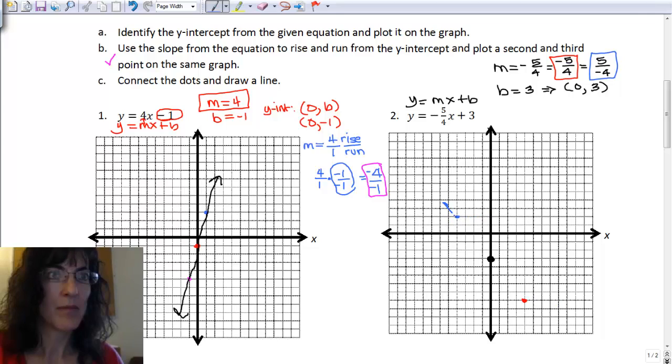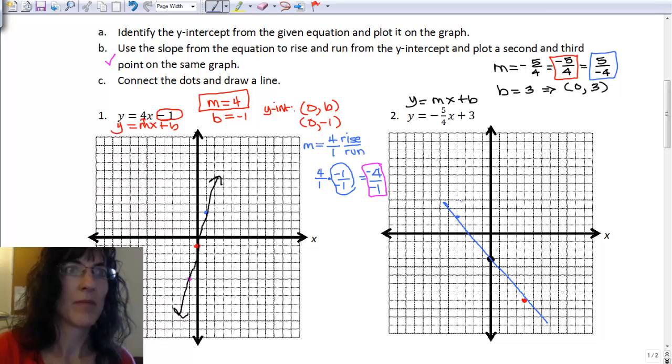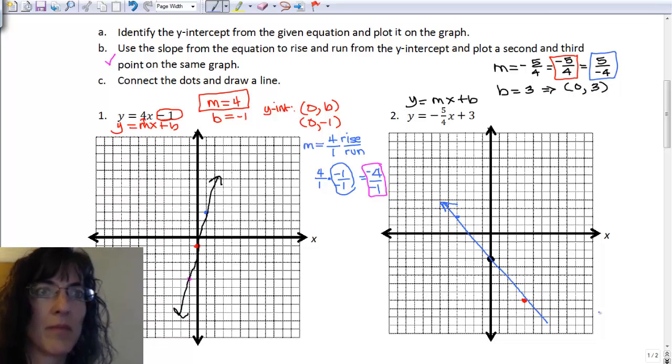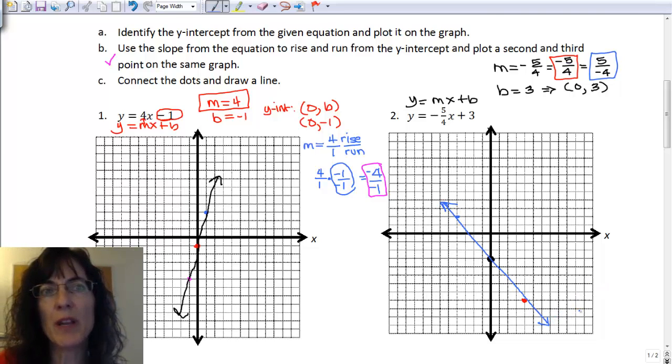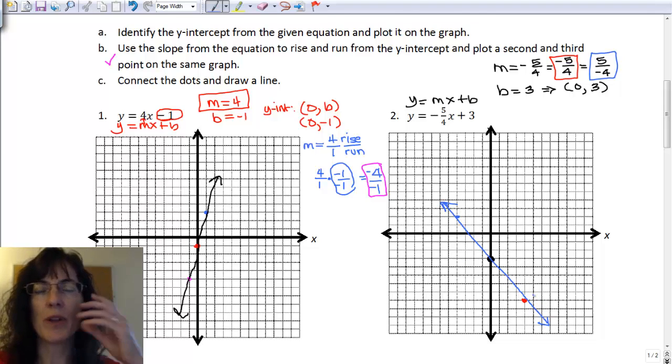And there's my line. I do want to point out that you need to have arrows on the ends of your lines because they indicate that the line goes on and on. When we have an equation, we are talking about every single dot that you could possibly make in the direction that these three points are indicating.